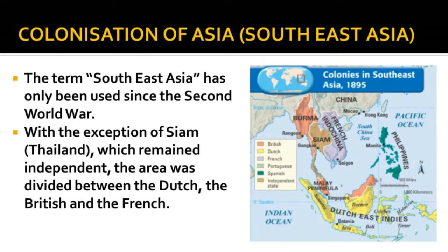Colonization of Asia — Southeast Asia. The term Southeast Asia has only been used since the Second World War. It denotes the area that originally covered Malaya, Dutch East Indies, Burma, Siam, French Indochina and the Philippines. With the exception of Siam (Thailand), which remained independent, the area was divided between the Dutch, the British and the French.